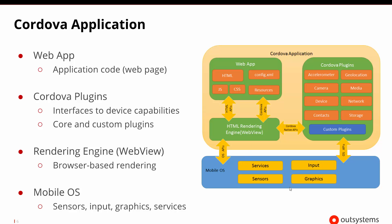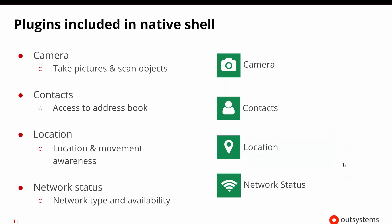The mobile operating system will have different input capabilities, graphics, sensors, and services. The Cordova plugins — there are a number of common default plugins, and then there are also custom plugins that can interact with the device itself. In their case they're interacting with the mobile operating system and native code to be able to work on all those pieces.